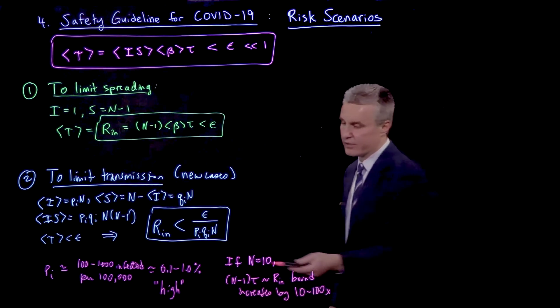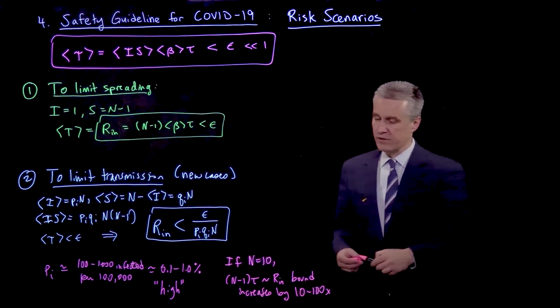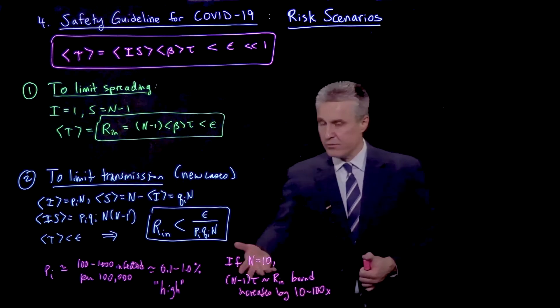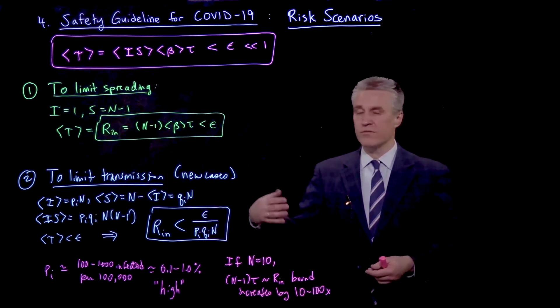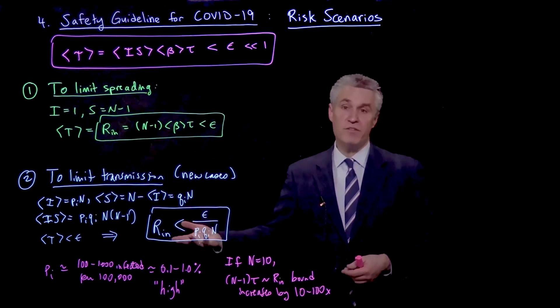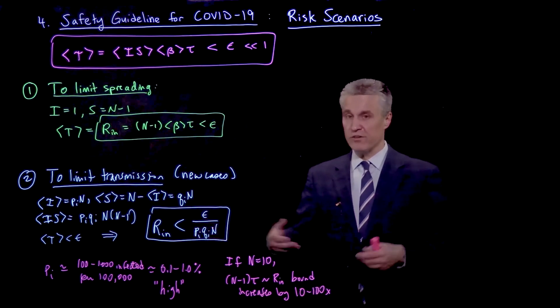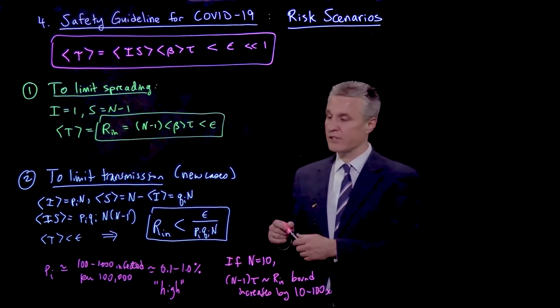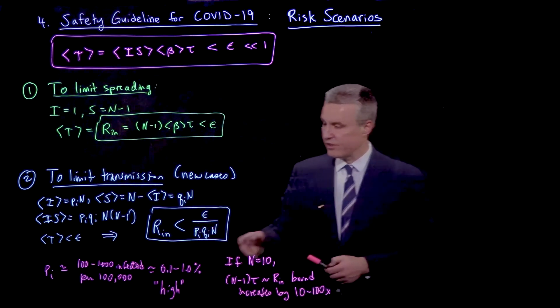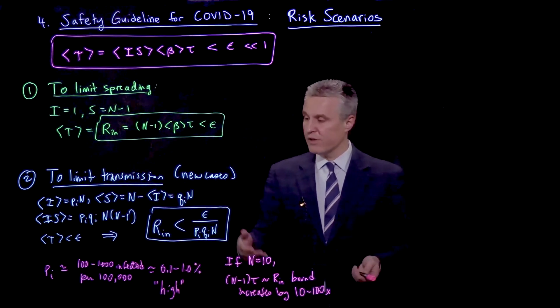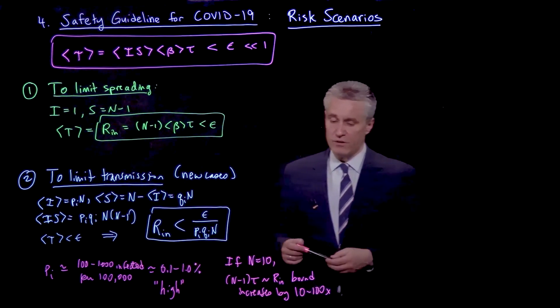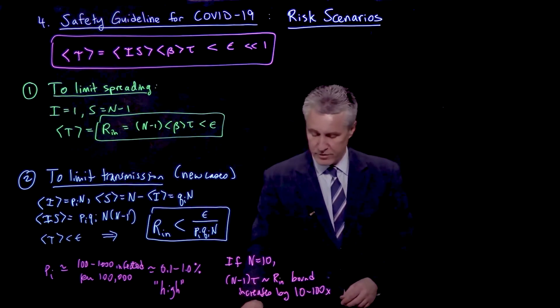This indoor reproductive number that we're bounding, this bound will increase or increases by 10 to 100 times. So that means that if the thing was telling us that we could be in the room for five hours, maybe now it'll be 50 hours or even 500 hours, depending on how low the prevalence actually gets. And of course as the prevalence goes down further and the epidemic disappears, we start to completely relax our assumptions.